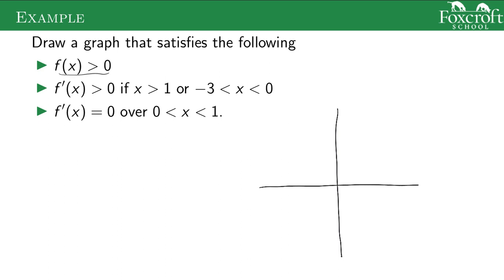The first condition is that f(x) is greater than zero, so the graph is always above the x-axis. The function is increasing — f'(x) > 0 — when x is greater than one and when x is between negative three and zero. Then f'(x) equals zero between zero and one. So between negative three and zero the graph goes up to the right, from zero to one it's flat, and for x greater than one it goes up to the right again.